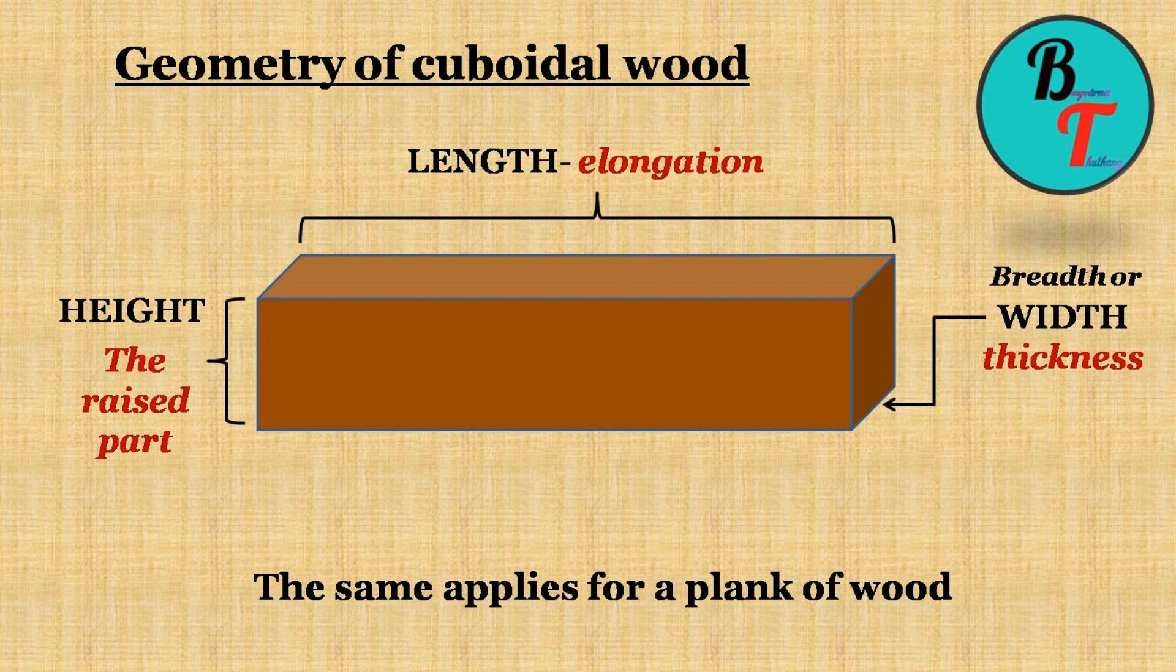As per our figure, the elongation will be termed as length, the thickness of the wood will be termed as its breadth or width, the raised part if you place the wood on the floor will be termed as its height. We can consider the same for a flattened plank of wood.